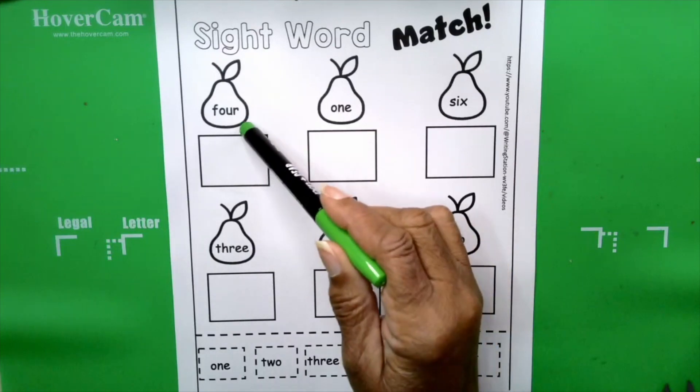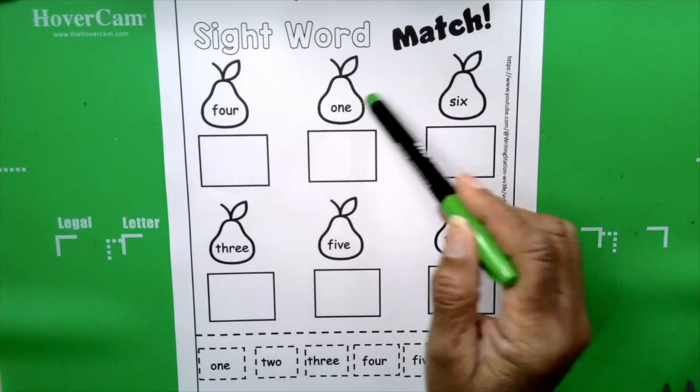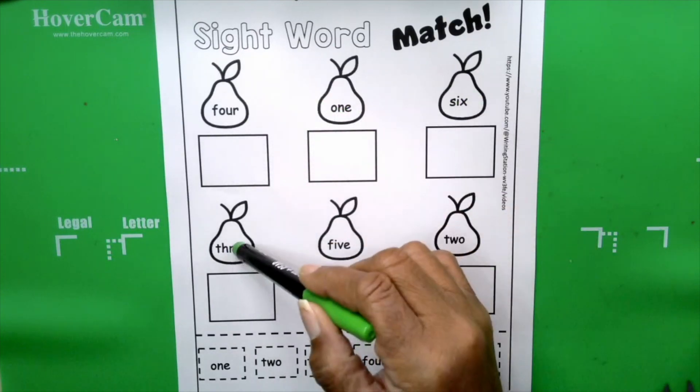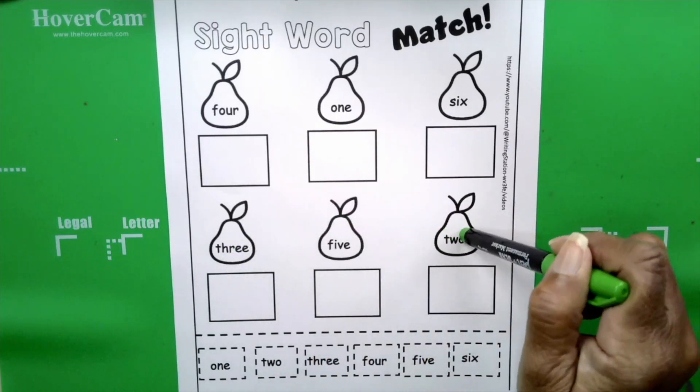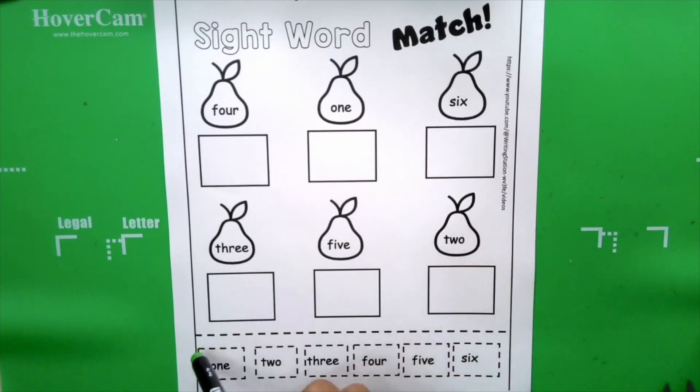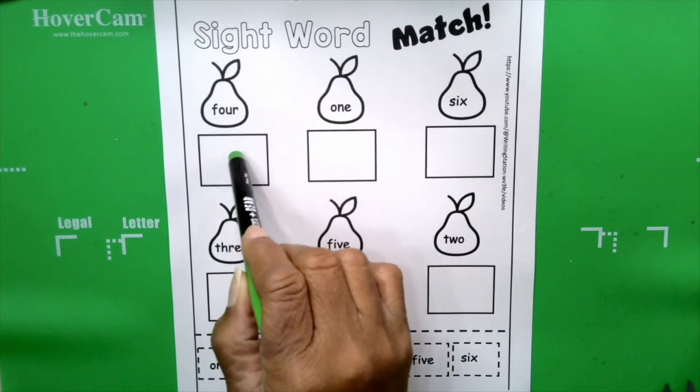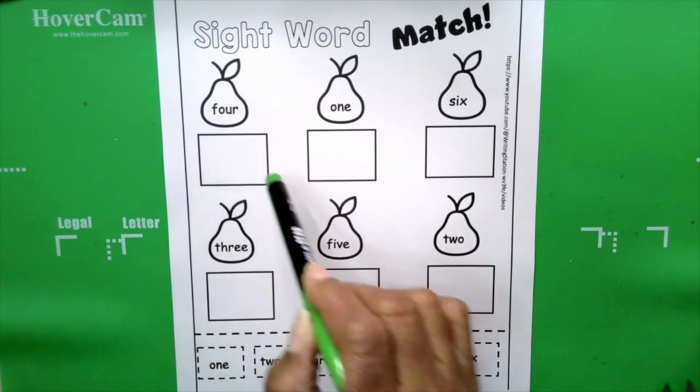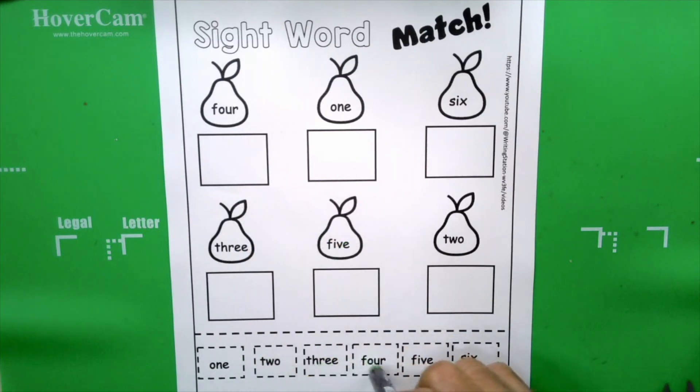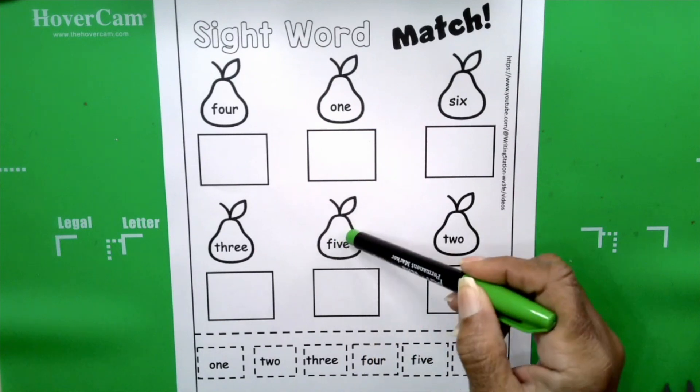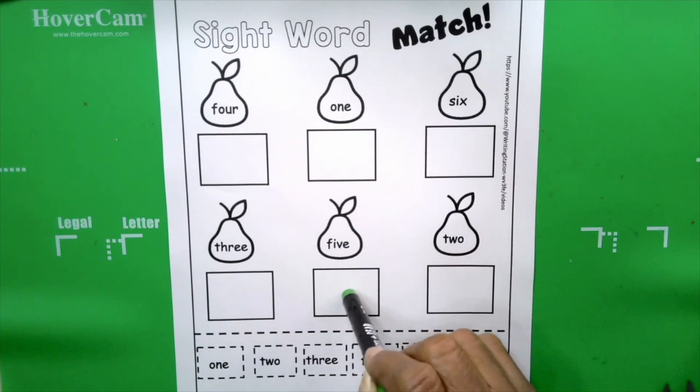Repeat after me: four, one, six, three, five, two. We're going to cut out the words at the bottom, which are the same words, and we're going to match. We're going to find the word four and match it and paste it in the box. We're going to find the word five from here and find the word that says five on the pair and paste it in the box.